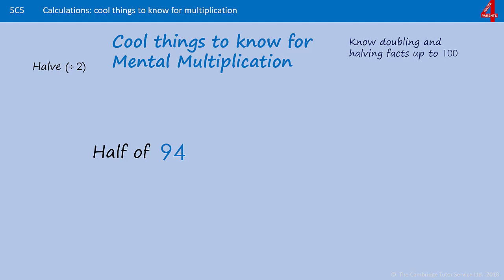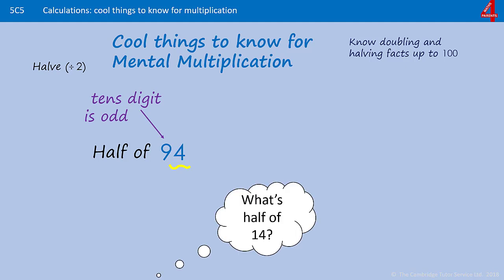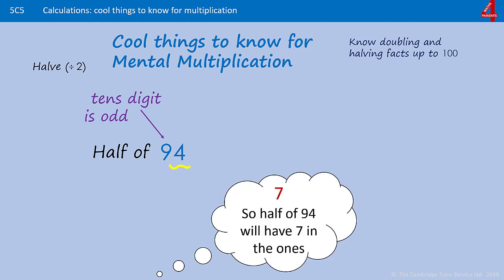One last one to try. Half of 94. The ones isn't going to be half of 4 because the tens digit is odd, so we ask ourselves, what's half of 14? Half of 14 is 7, so half of 94 will have a 7 in the ones column. If you remember that half of 90 is 45, that helps you to work out that half of 94 is 47. Have a great day.